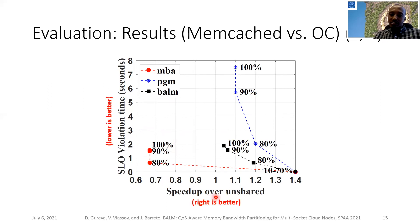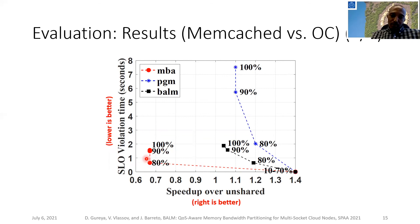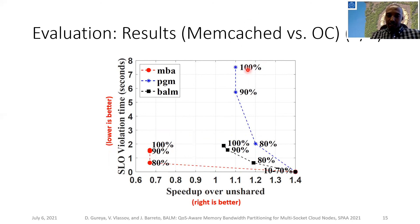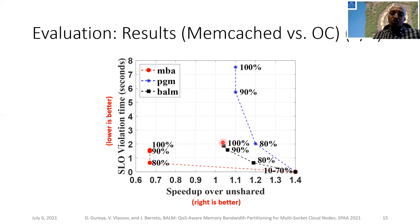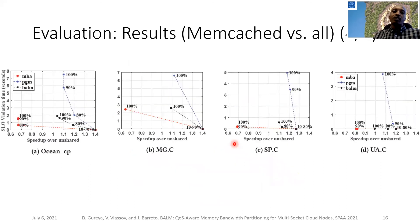This figure shows speedup of best-effort applications on the x-axis and SLO violation time of the latency-critical application on the y-axis, obtained by different mechanisms when the latency-critical application operates at a fraction of peak load. For speedup of best-effort applications, higher is better; for SLO violation time, lower is better. MBA achieves the best SLO violation time but the worst speedup, while page migration achieves good speedup but worse SLO violation time. In contrast, BALM achieves the best of both mechanisms — lower SLO violation time and higher throughput for best-effort applications. Similar results were observed for other applications; please see the paper for detailed analysis.